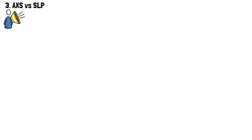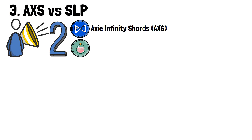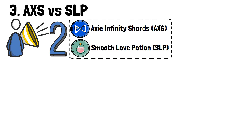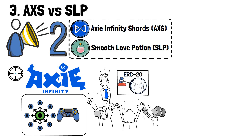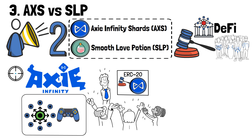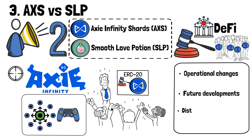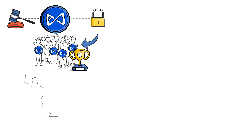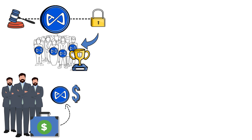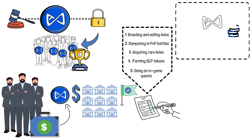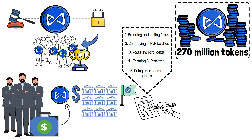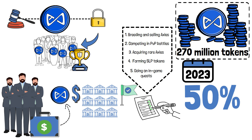Axie Infinity relies on two cryptocurrencies: Axie Infinity Shards (AXS) and Smooth Love Potions (SLP). For the goal of creating a fully decentralized gaming experience, the Sky Mavis team introduced AXS as an ERC-20 governance token. Holders of AXS can have their say on operational changes, future developments, and distribution of the Axie community treasury funds. Apart from acting as a governance token, AXS can also be staked and received as a reward. Investors can purchase AXS on various crypto exchanges or earn it by completing tasks such as breeding and selling Axies, competing in PvP battles, acquiring rare Axies, farming SLP tokens, and going on in-game quests. AXS has a limited supply of 270 million tokens, and as of the end of 2023, over 50% of all token supply has already been minted.